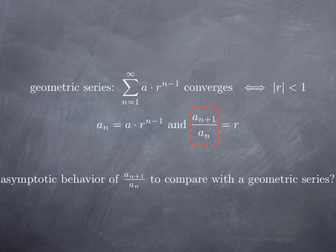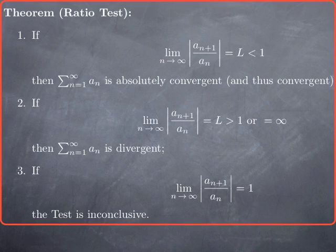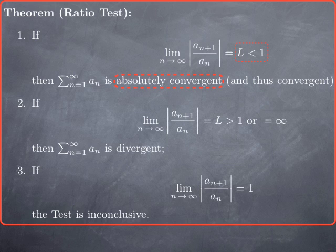The basic idea behind the ratio test is to look at the asymptotic behavior of the ratio of two consecutive terms, a_{n+1} over a_n, and see if we can compare with a geometric series. Carrying this analysis, the result we obtain is the ratio test, which tells us that if the absolute value of the ratio a_{n+1} over a_n has a limit strictly less than 1, then the series is absolutely convergent.